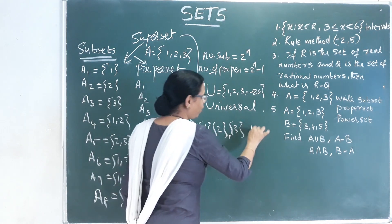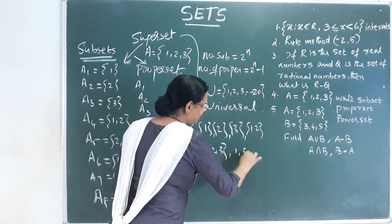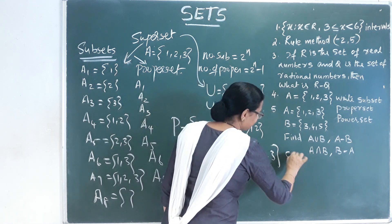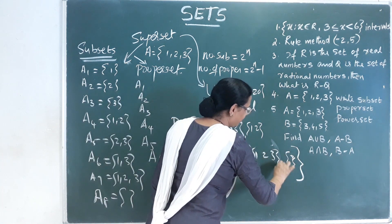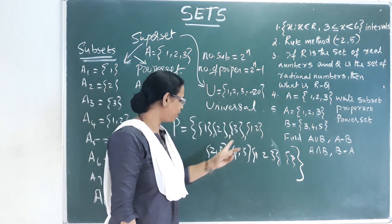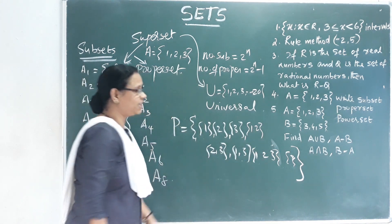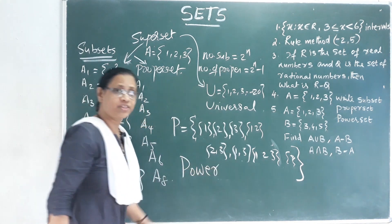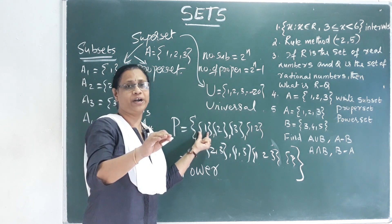Okay, this is power set. What is power set? All the sets, we call it set. That means {1}, {2}, {3}, {1, 2}, {2, 3}, {1, 3}, {1, 2, 3} — all listed out. This is one element.